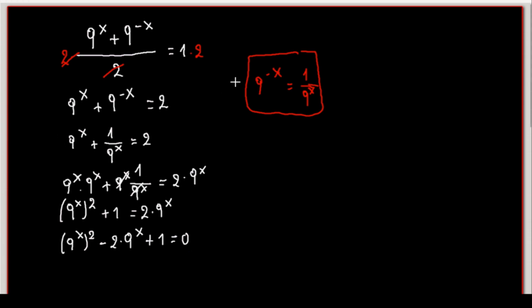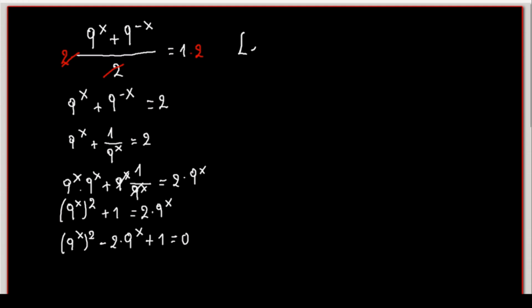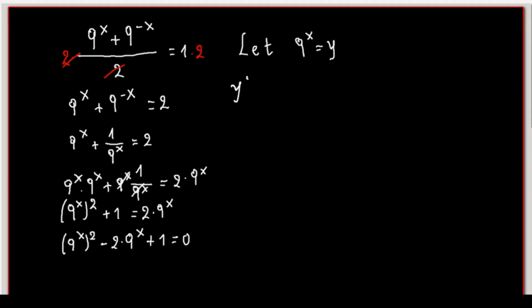Now, if we substitute 9 to the power of x with a number y, our equation becomes y raised to the power of 2 minus 2 times y plus 1 equals 0.